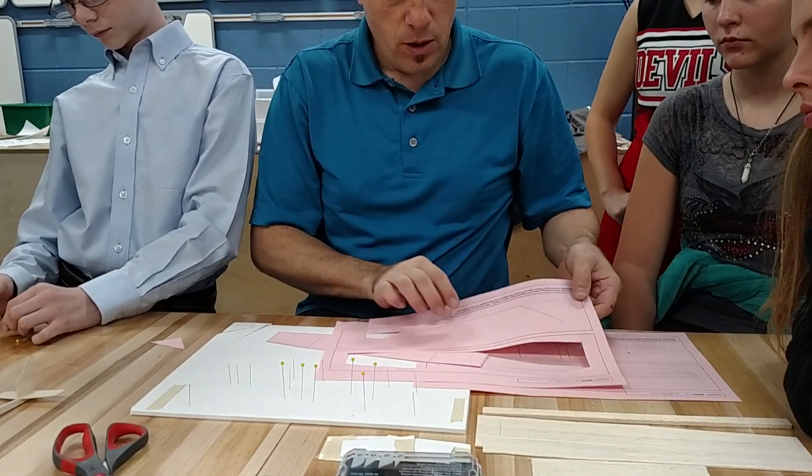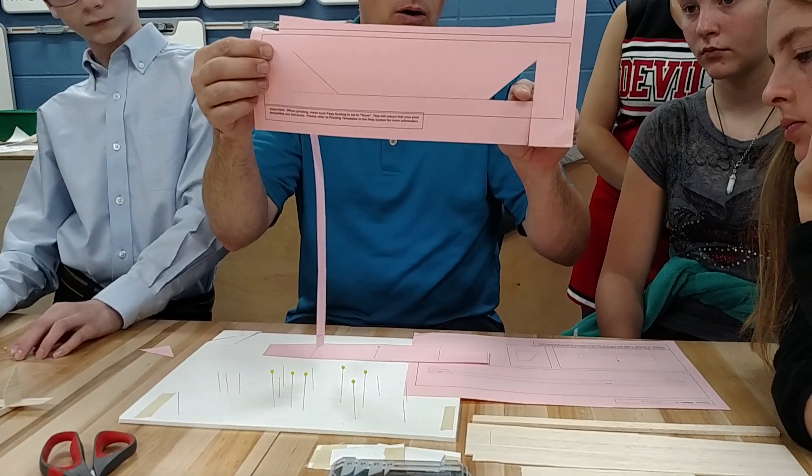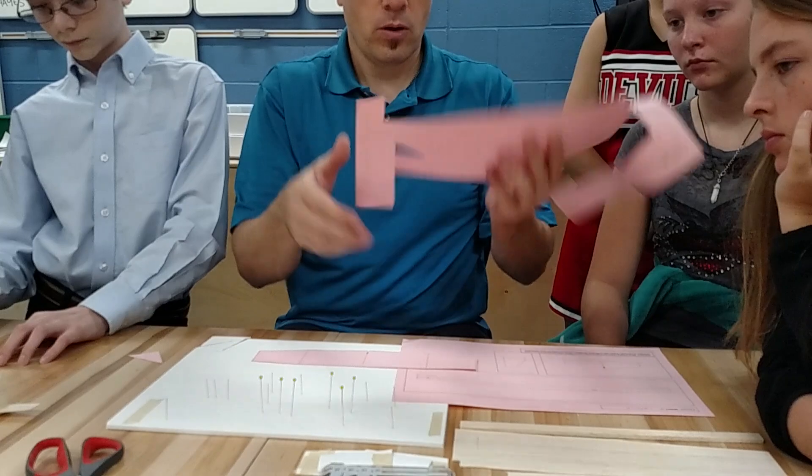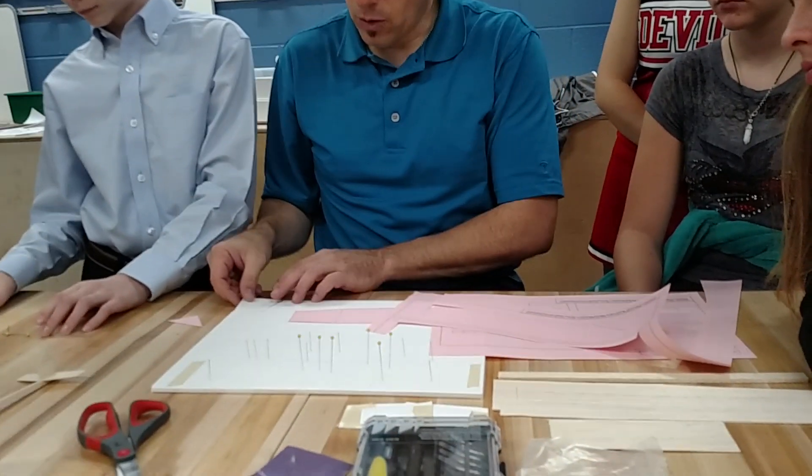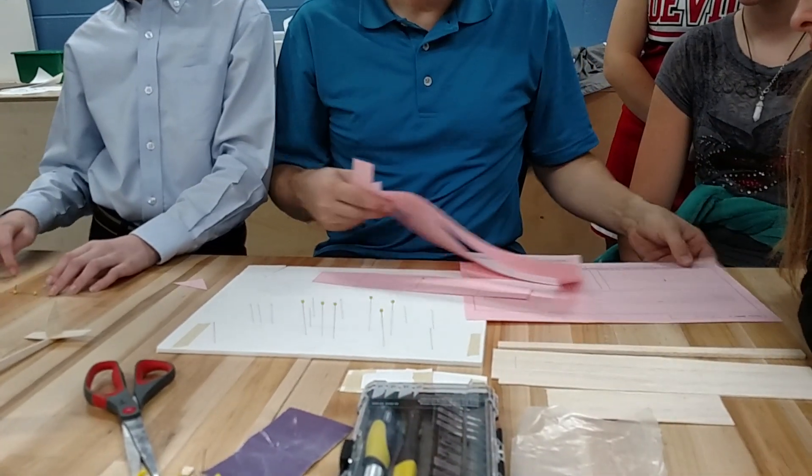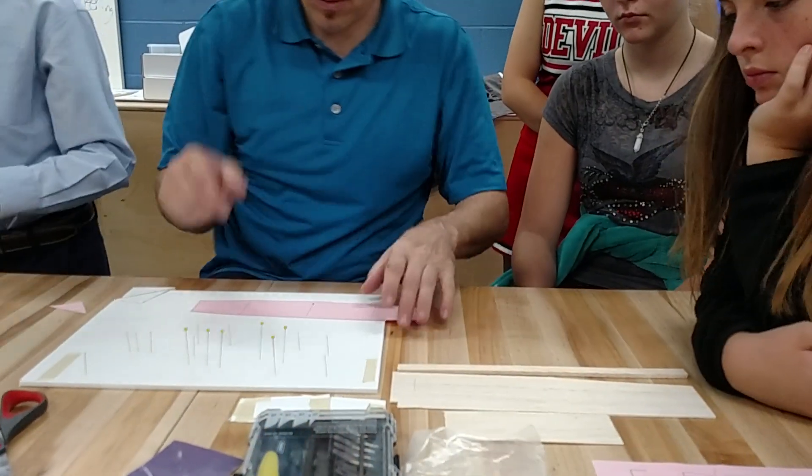This right here is the pattern for our tip dihedral, and you'll see I already cut a triangle out. We'll get to that later. This is going to help us create a support piece that we'll use to glue the tips on once we cut those. So I'm going to set this aside, but you would cut out all of your pattern pieces and have them ready.